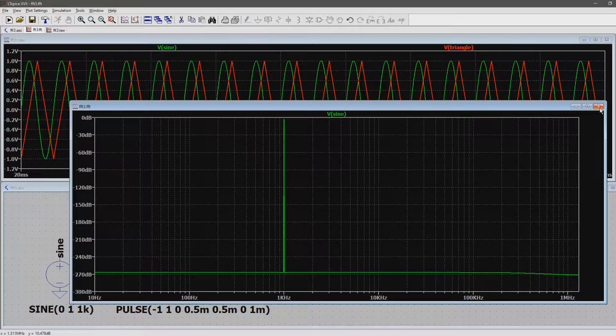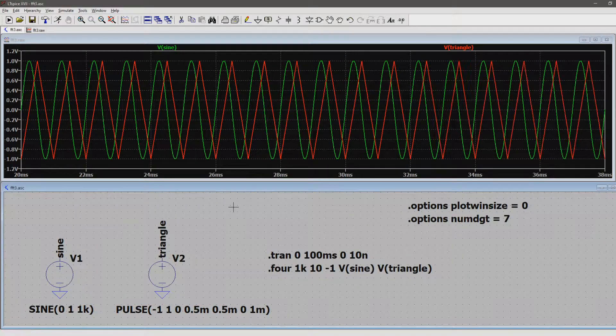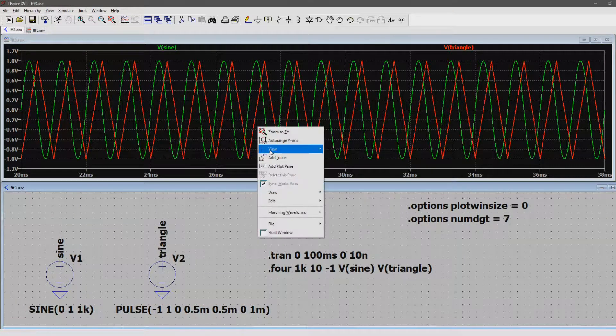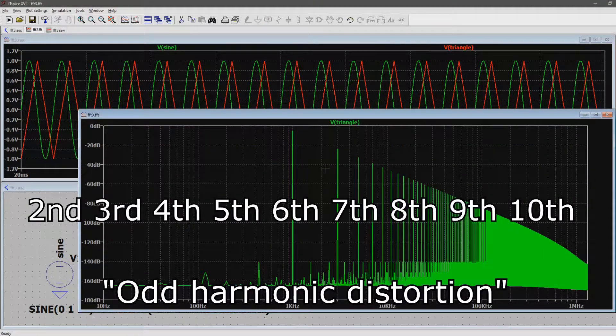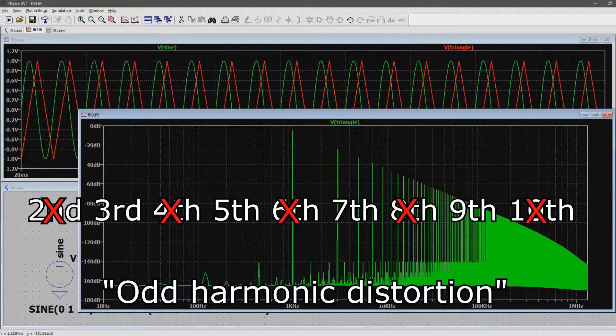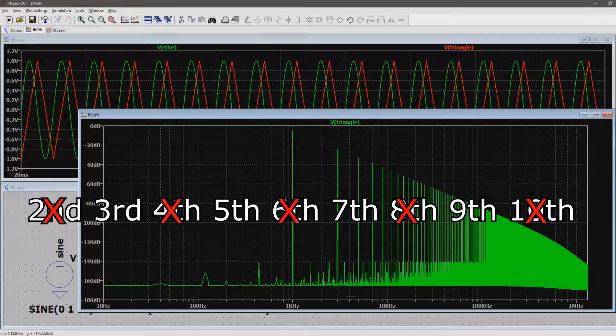But now let's take a look at the triangle wave. A triangle is nothing more than a fundamental sine wave with quite heavy odd harmonic distortion. This is just another way of saying that there is a 3rd, 5th, 7th and so on harmonics, but no 2nd or 4th and so on.